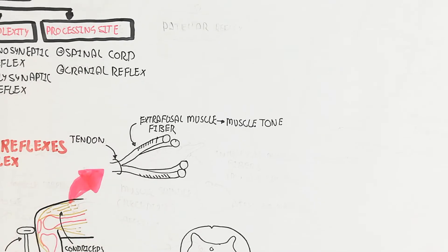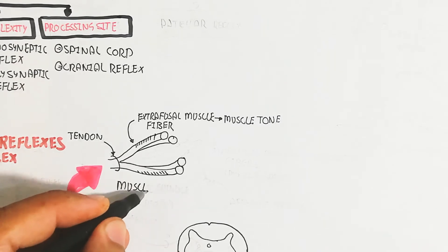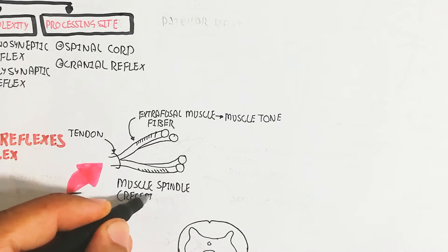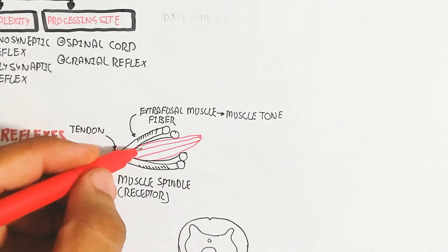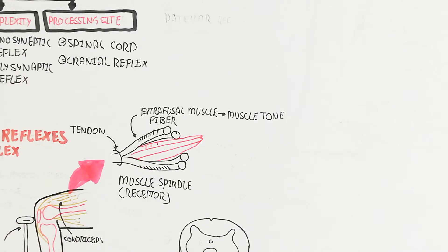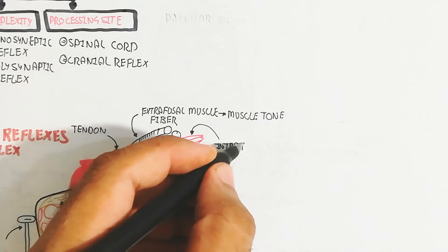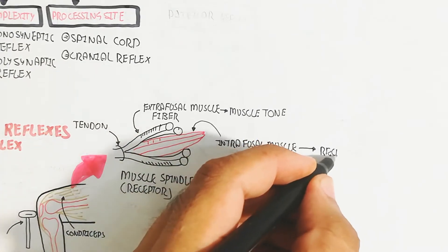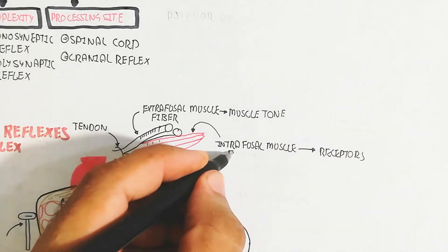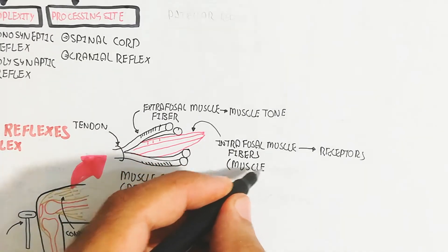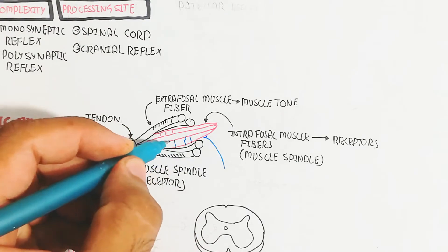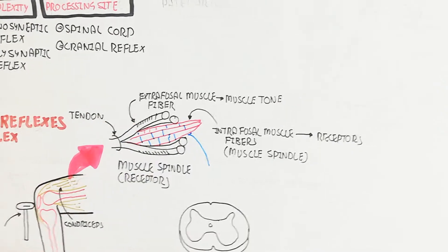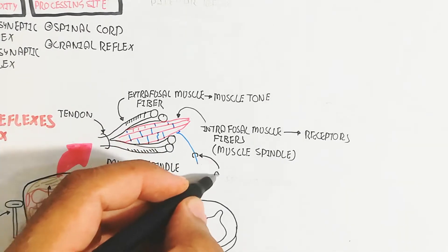The extrafusal muscle fiber maintains muscle tone. Within the extrafusal muscle fiber is the intrafusal muscle fiber, which acts as the receptor. This intrafusal muscle fiber receives the stimulus signal — this structure is the muscle spindle. It receives the signal and sends it via the afferent neuron.